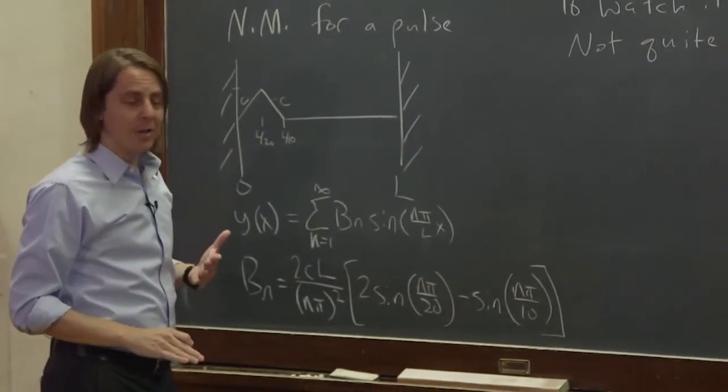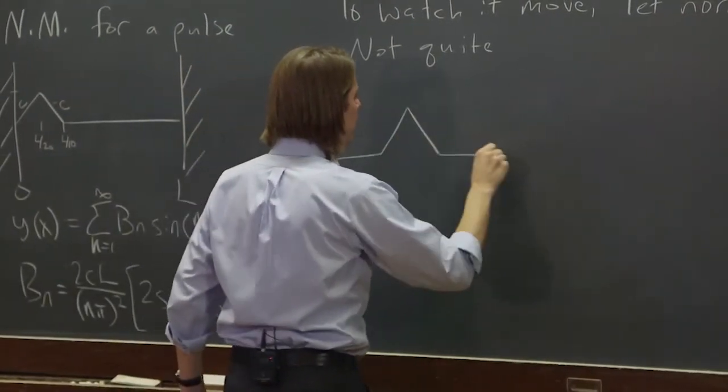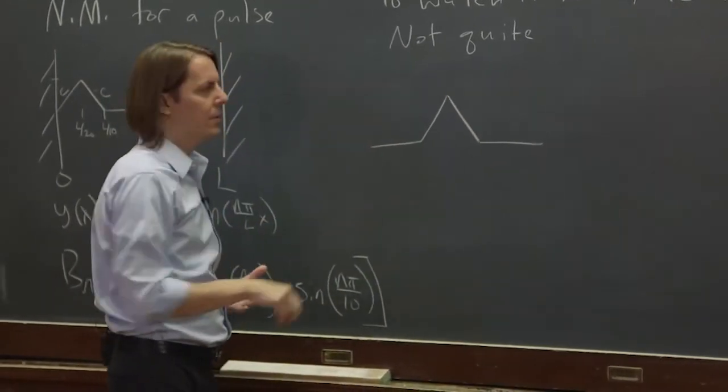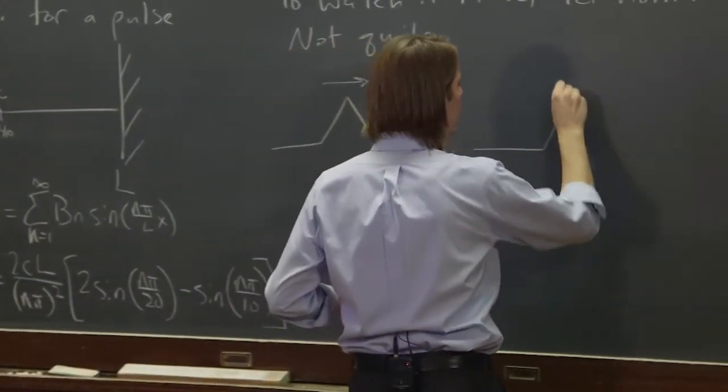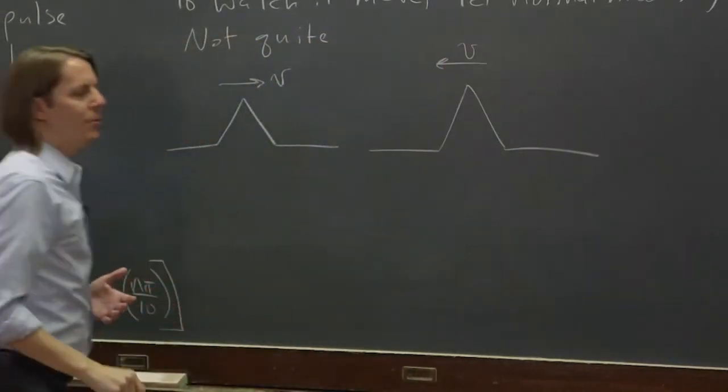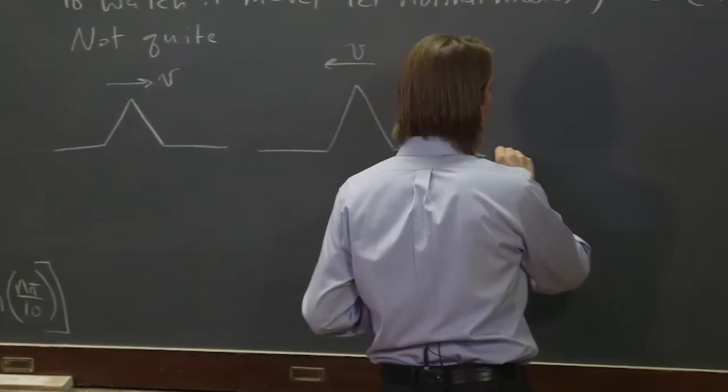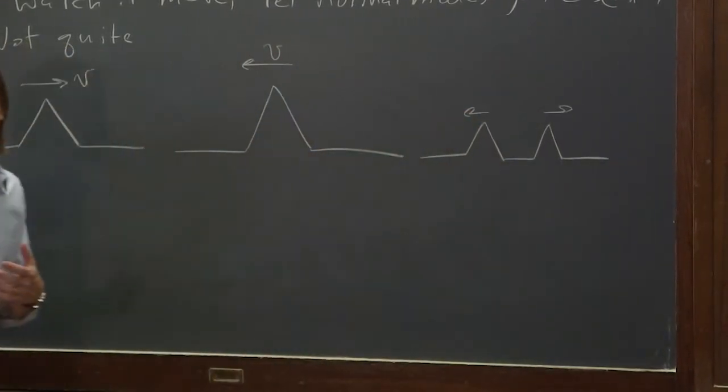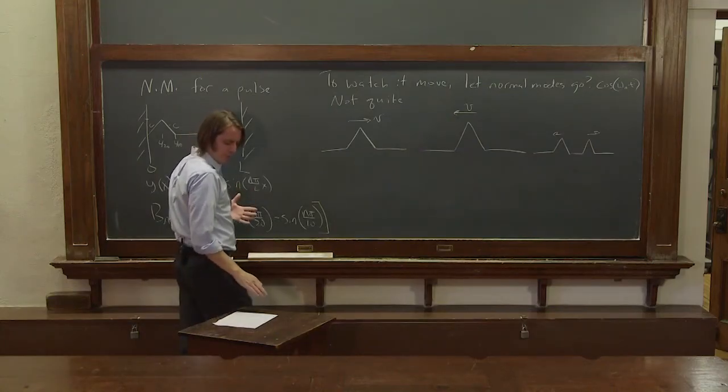You could do that and that'll give you one kind of motion, but there's actually many different kinds of motion that could occur. You could have a pulse in a string that looks like this. And if you just let it go, what's it going to do? It could be a pulse going that way. Maybe you froze it in time when it was moving to the right. Or it could be a pulse going this way. Maybe you froze it in time when it was moving to the left. Or if you let this go in time, maybe it would split into two pulses going in opposite directions. I don't know. What's it going to do? How do we tell the difference between those three things?